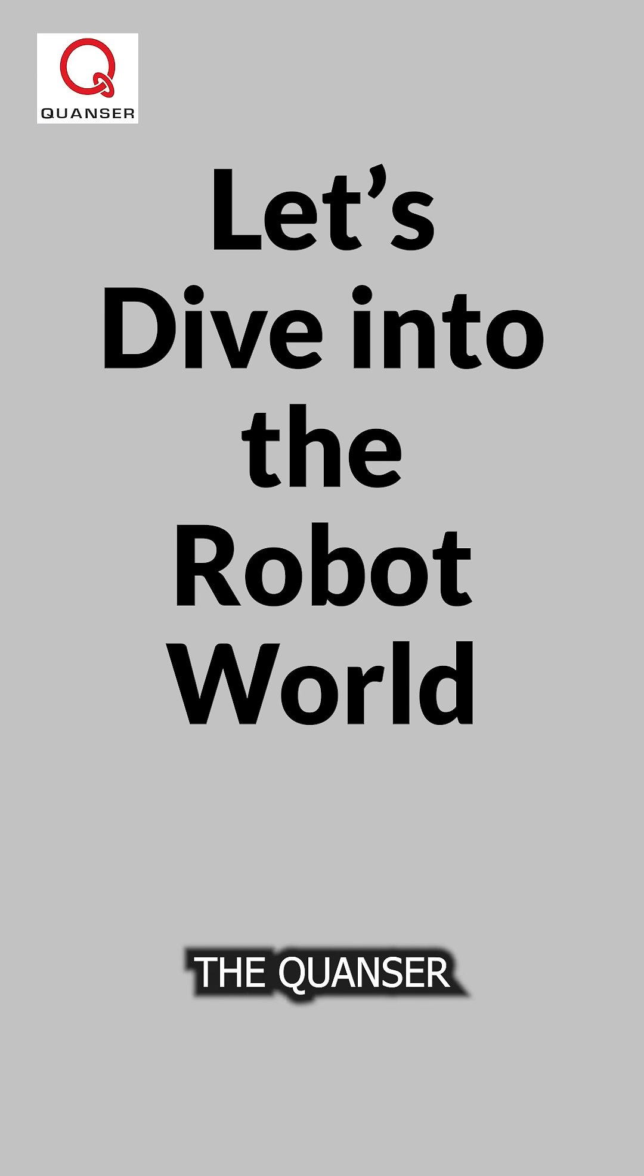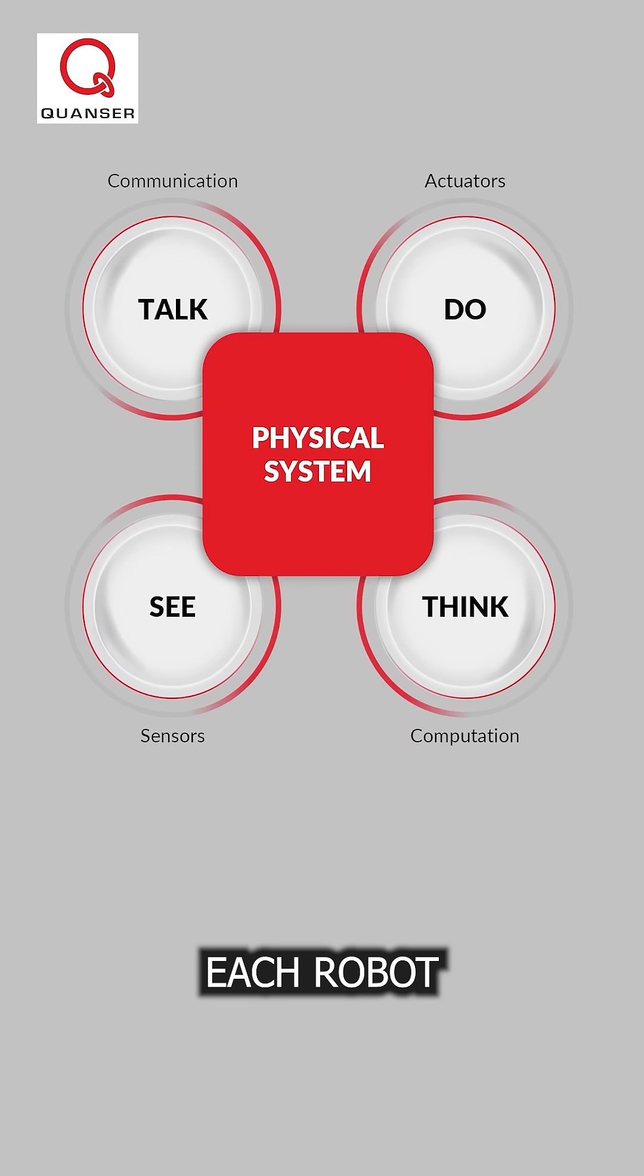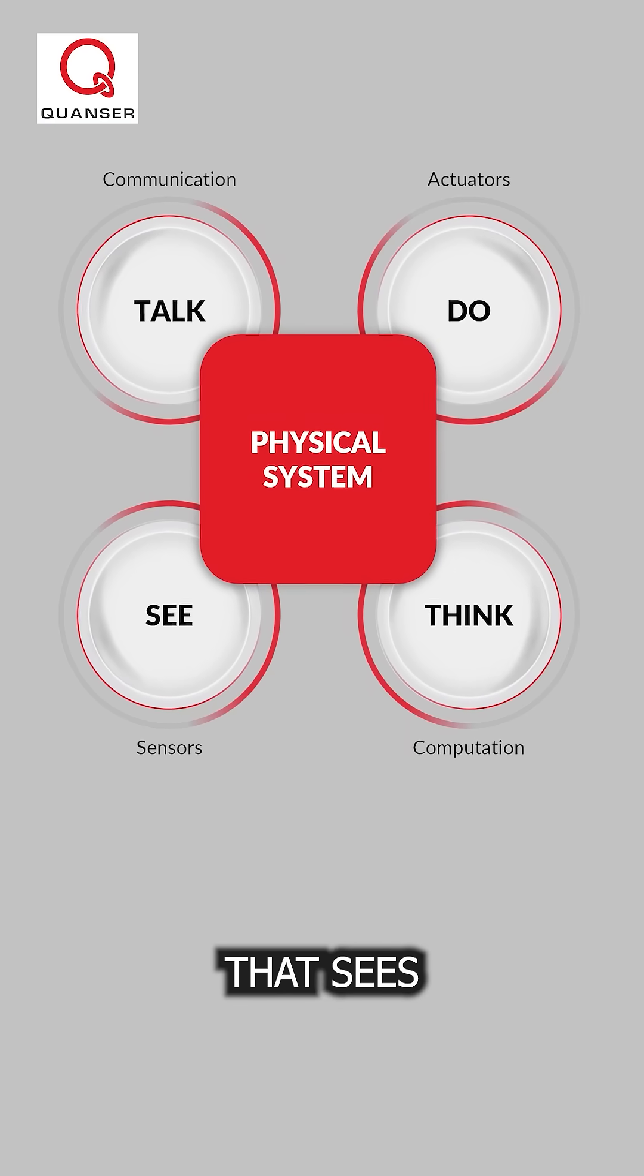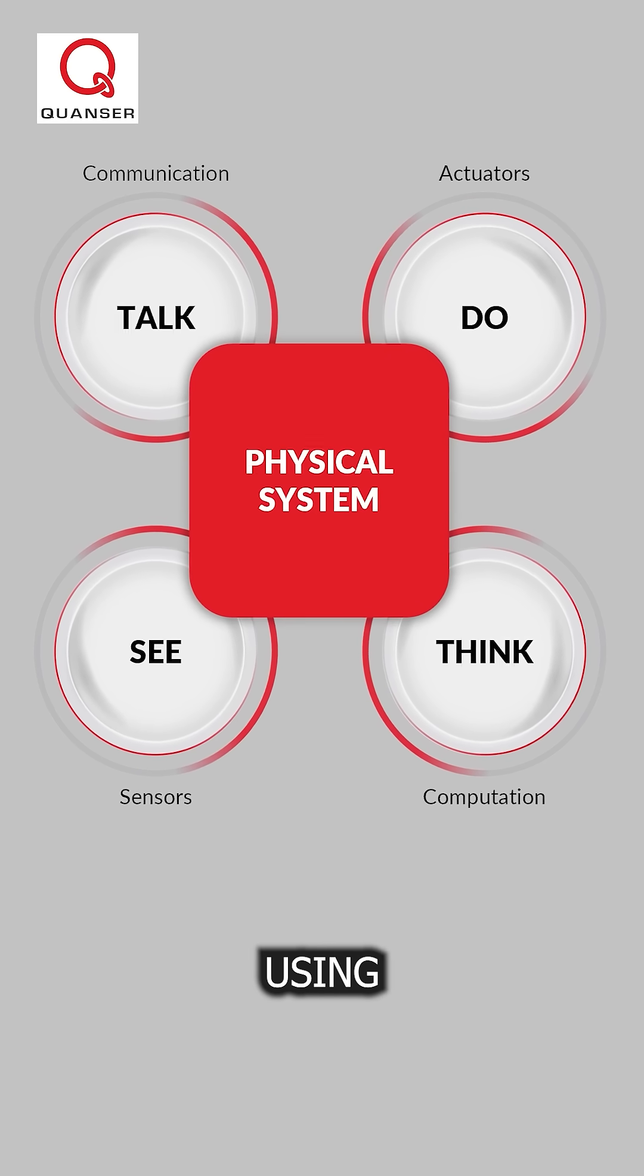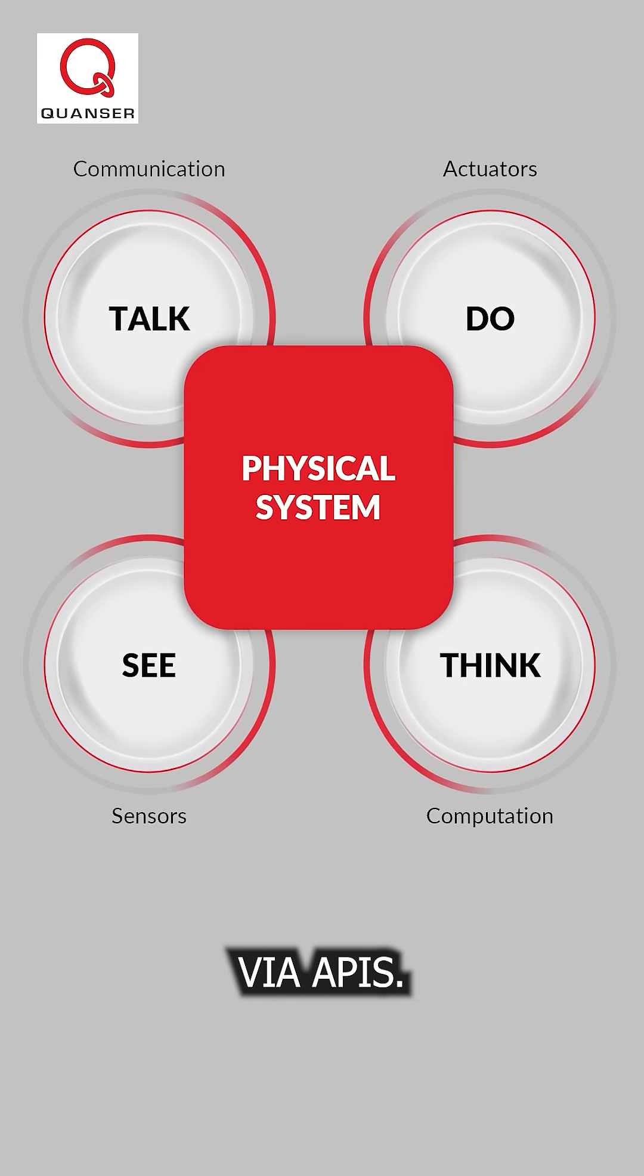Let's explore the Kwanzaa robot framework. Each robot is an intelligent system that sees through sensors, thinks with onboard compute, acts using actuators, and communicates via APIs.